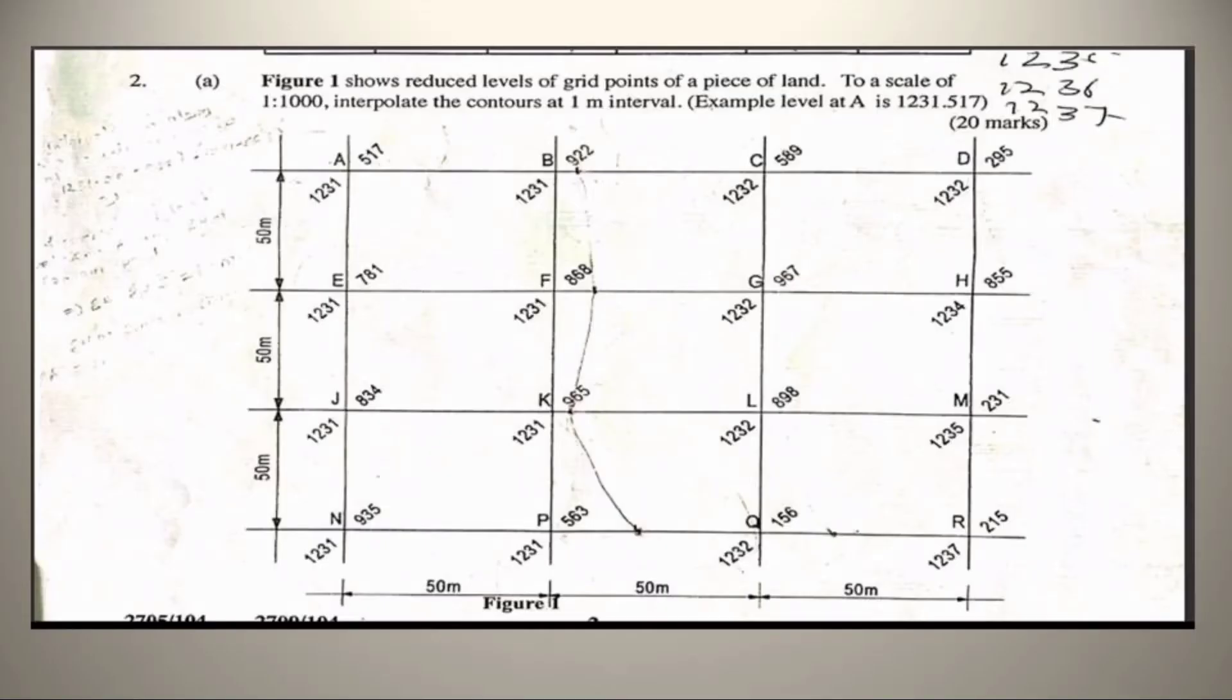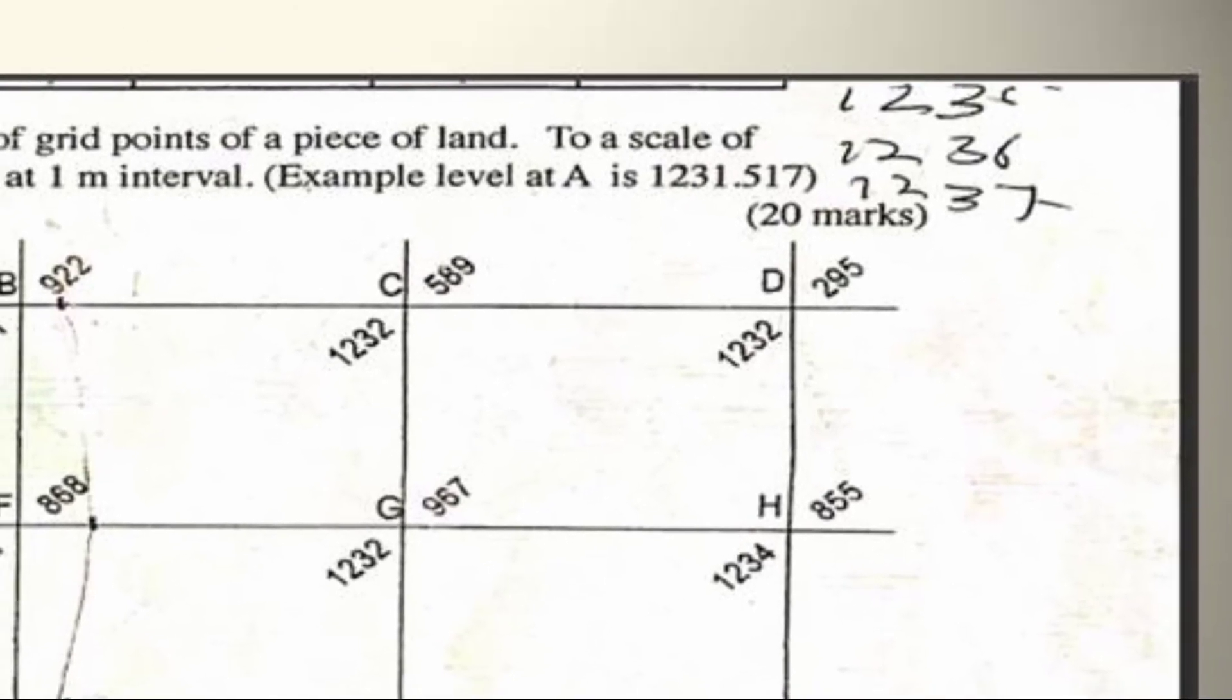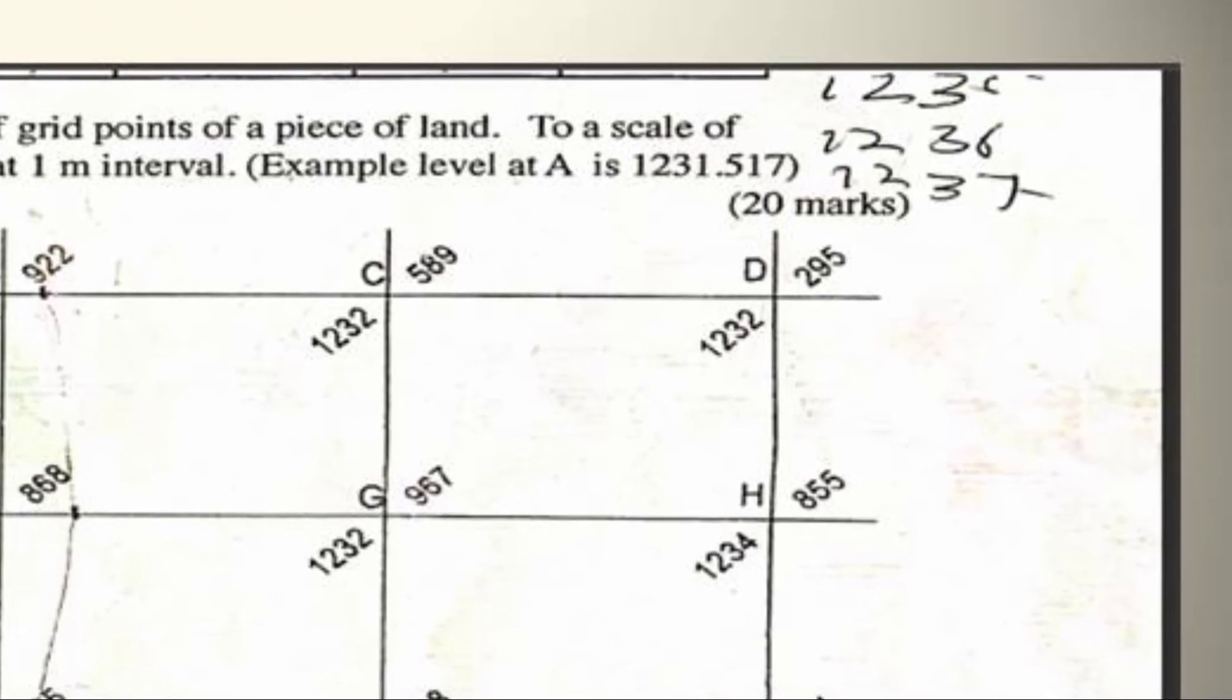Having finished that, let's go on to our next. Now we'll start by marking where the 1233 meter contour will fall. In line DH, GH, LM, QR, the 1233 meter contour are falling, and the remaining reduced level are either more or less than 1233. An example: CD falls short, and also CG, GL, LQ.